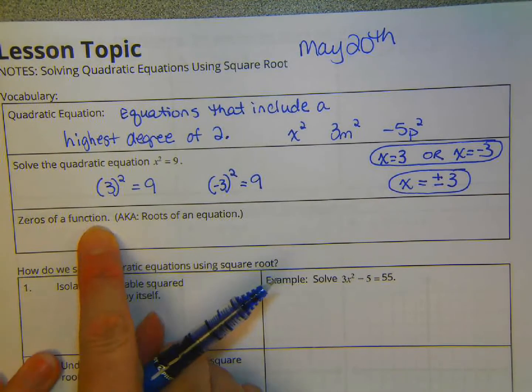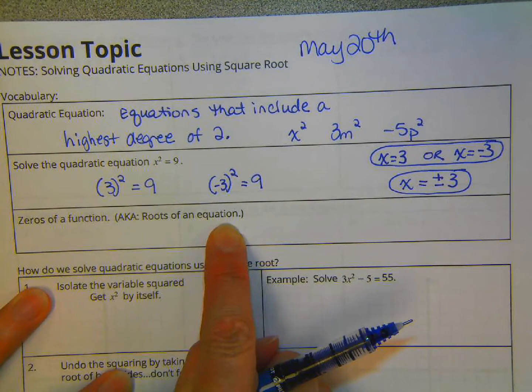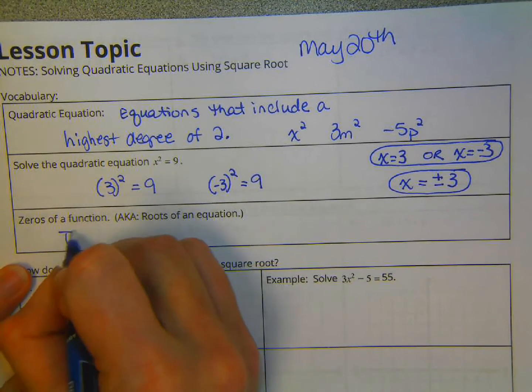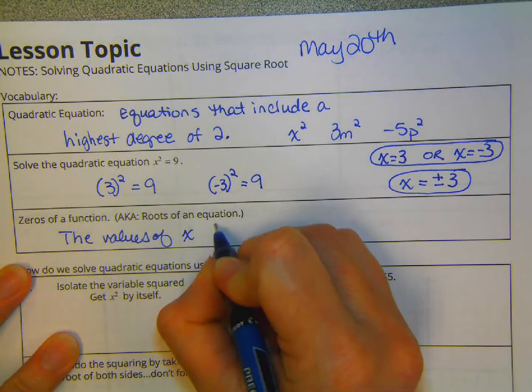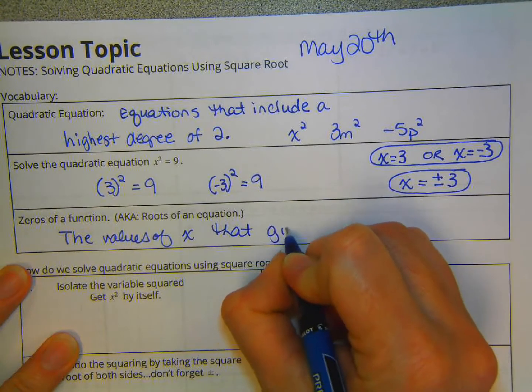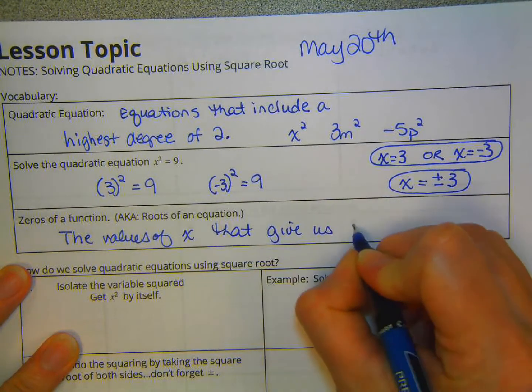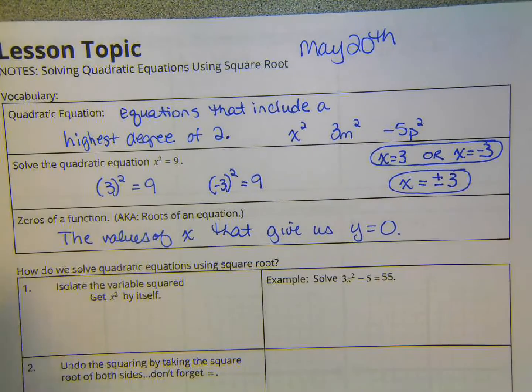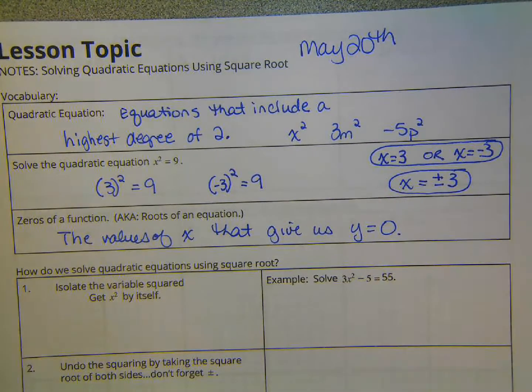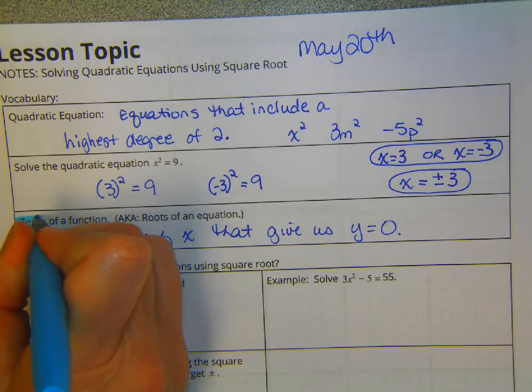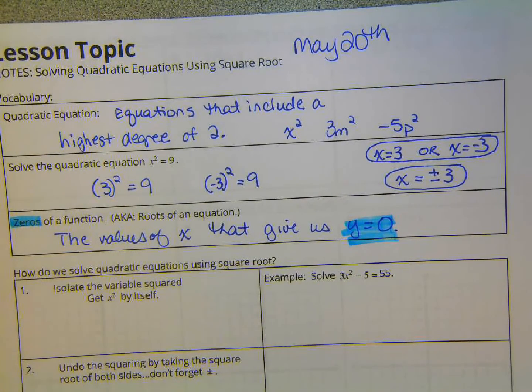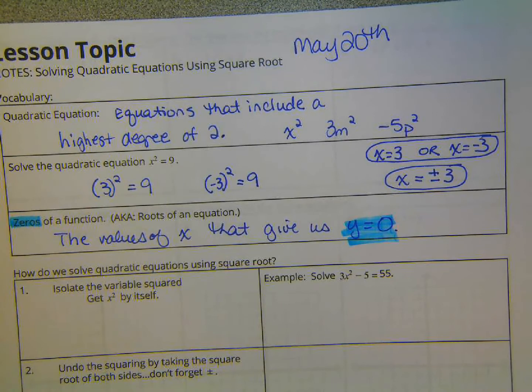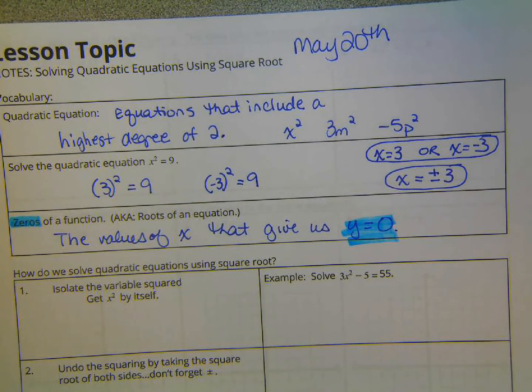Now, what are the zeros of a function, also known as the roots of an equation? These are the values of x that give us y equal to zero. I mean, they're called zeros. So that's where that comes from, because it gives us a y value equal to zero. The x values that give us a y equal to zero. And if you remember, when y is equal to zero, we also have the x-intercepts.